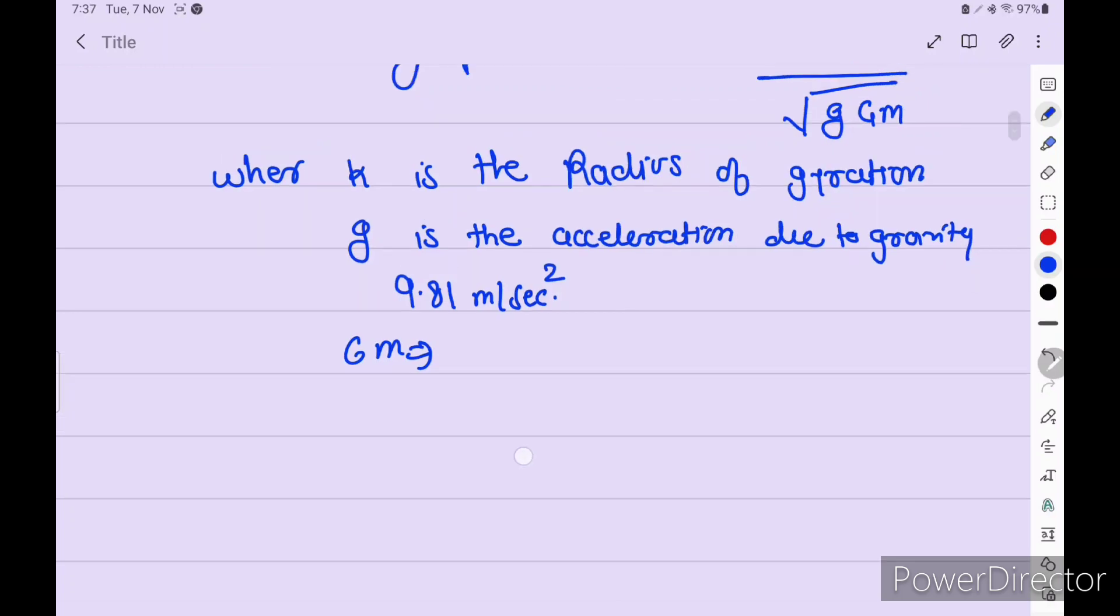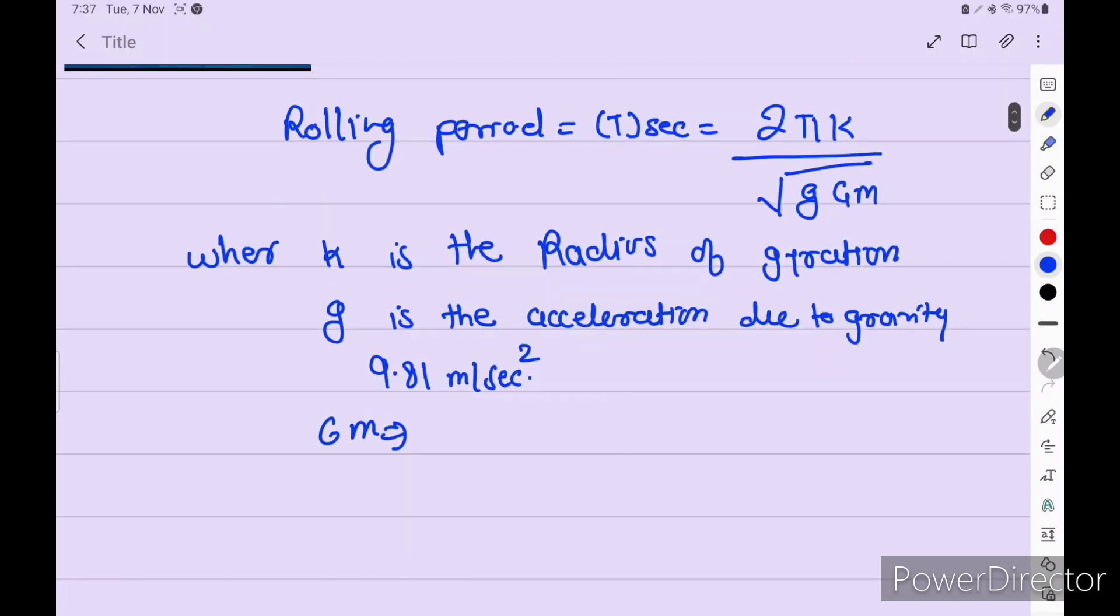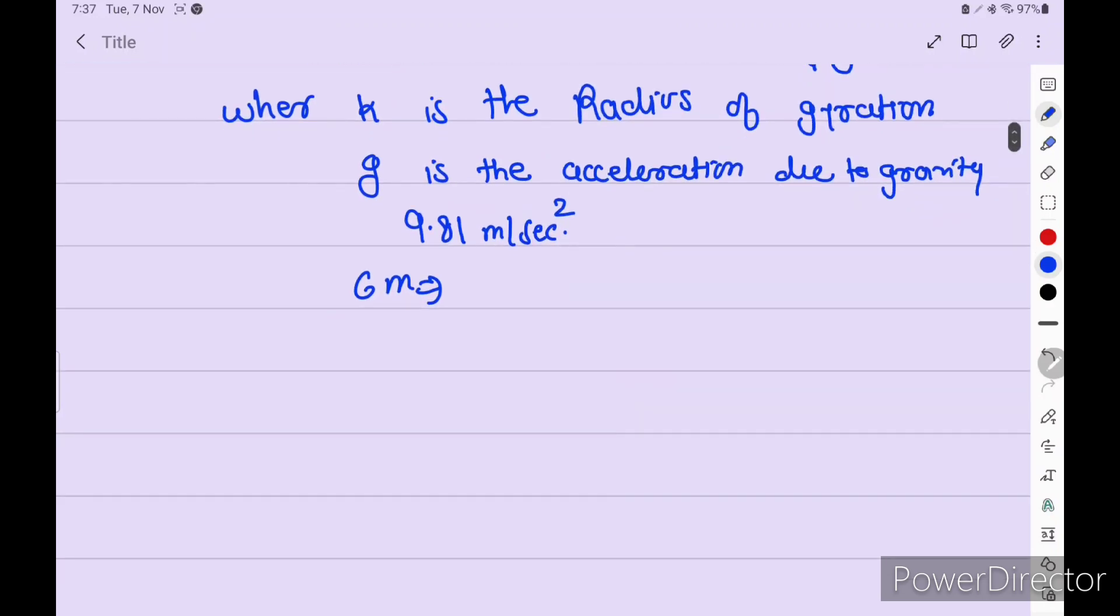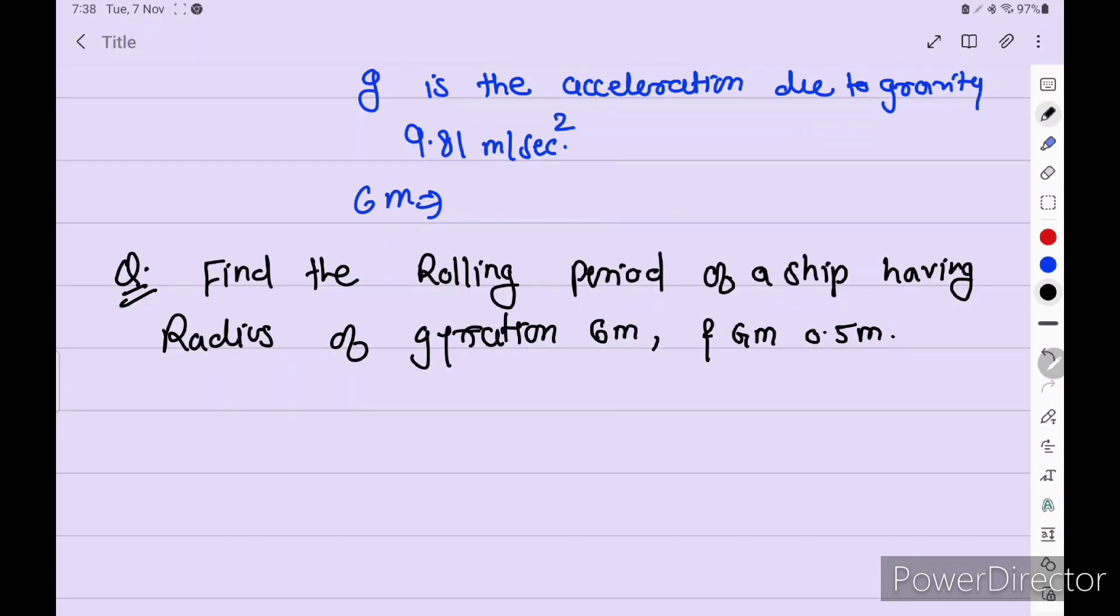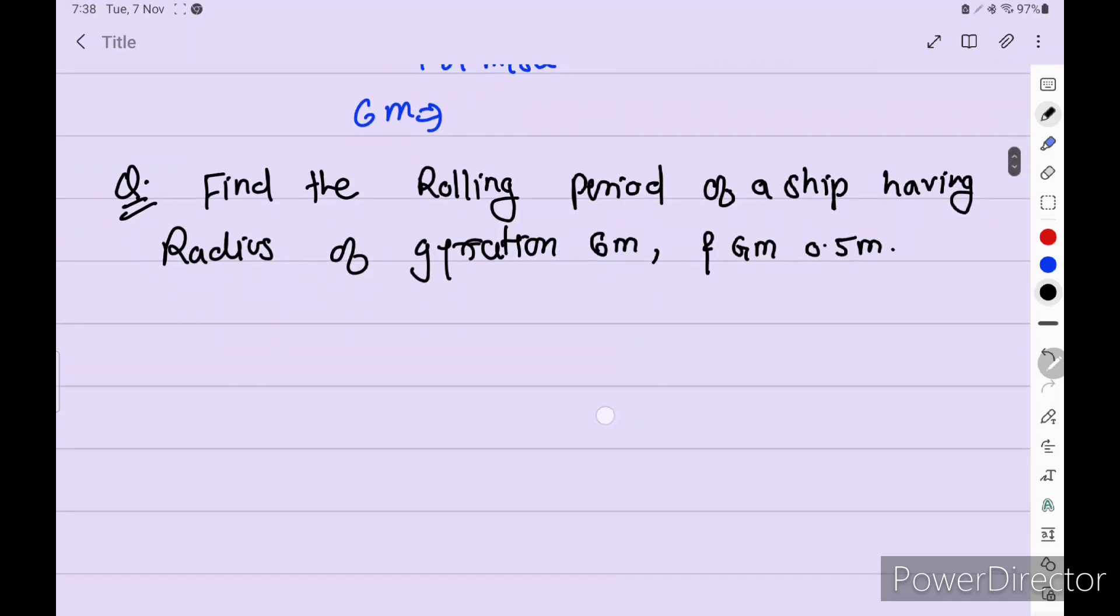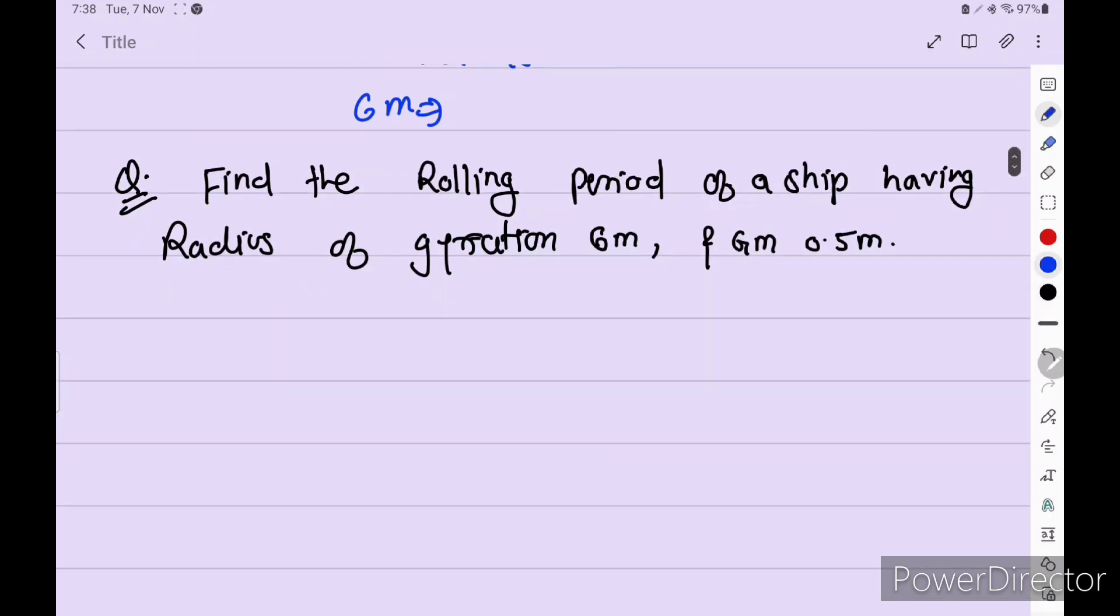This numerical is coming in part B section for 10 marks. Let's solve this type of numerical. Find the rolling period of the ship having radius of gyration 6 meters and GM is given 0.5 meters. Let's solve this numerical.